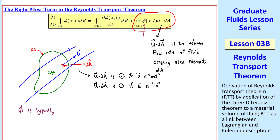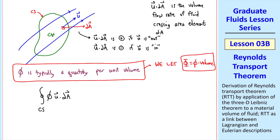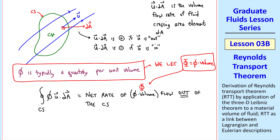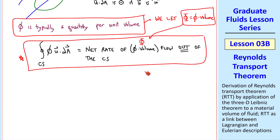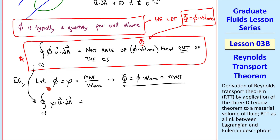The phi in this equation is typically a quantity per unit volume, so we let capital Phi equal lowercase phi times volume. Then this right-most integral can be thought of as the net rate of capital Phi flow out of the control surface. There will be locations where u is out and other locations where u is in, but since the outward flow is positive, this entire integral — remembering that the circle means we're integrating over the entire control surface — is the net rate of capital Phi flow out of the control surface. As a quick example, if we let phi equal rho the density, which is mass per volume, then capital Phi is just the mass, and this integral is the net rate of mass flow out of the control surface.